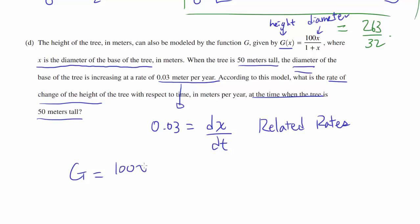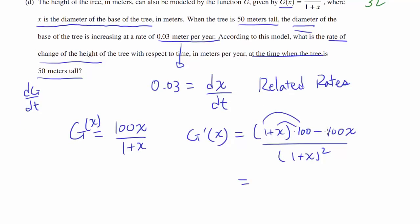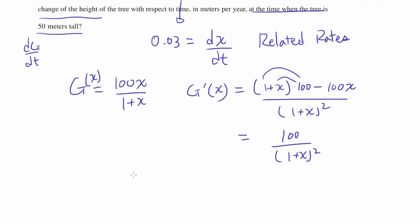We know G = 100x/(1+x). So before we find dG/dt, let's start by finding G'(x), because we are going to have to differentiate G in the end anyway. Using quotient rule, we have [(1+x)(100) - 100x(1)]/(1+x)^2. We have 100 + 100x - 100x, so 100x are going to cancel out. So we have 100/(1+x)^2 as G'(x).